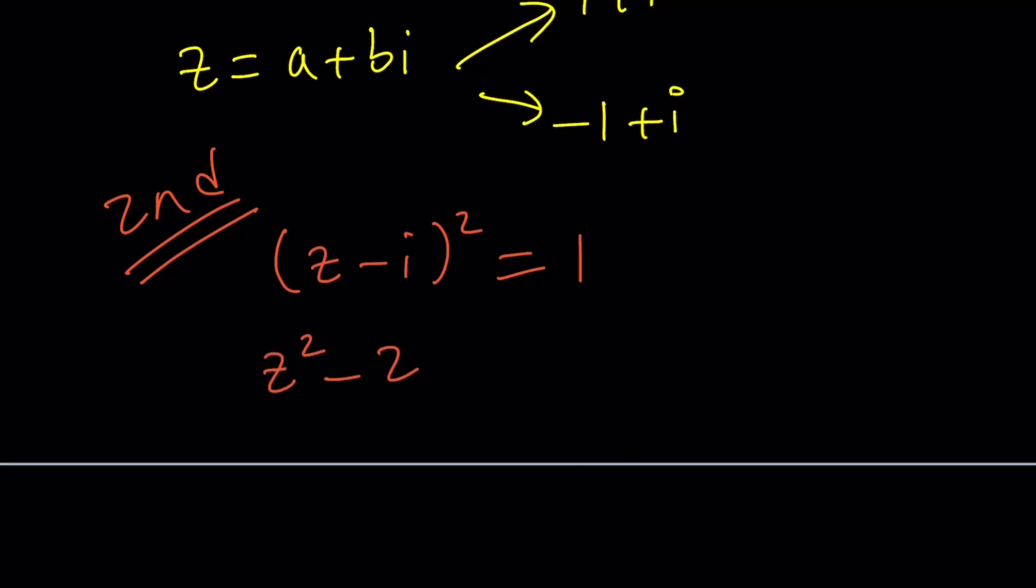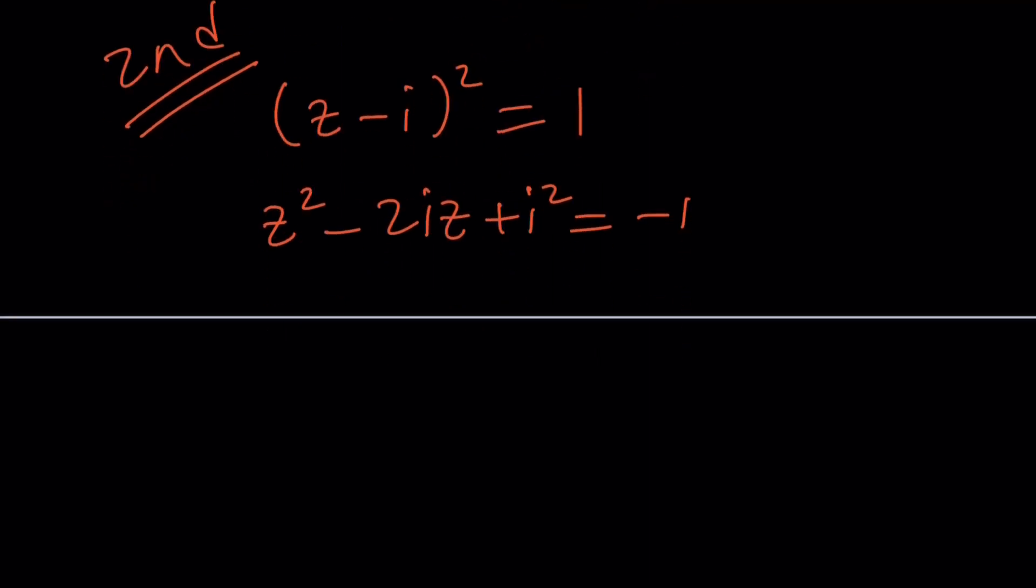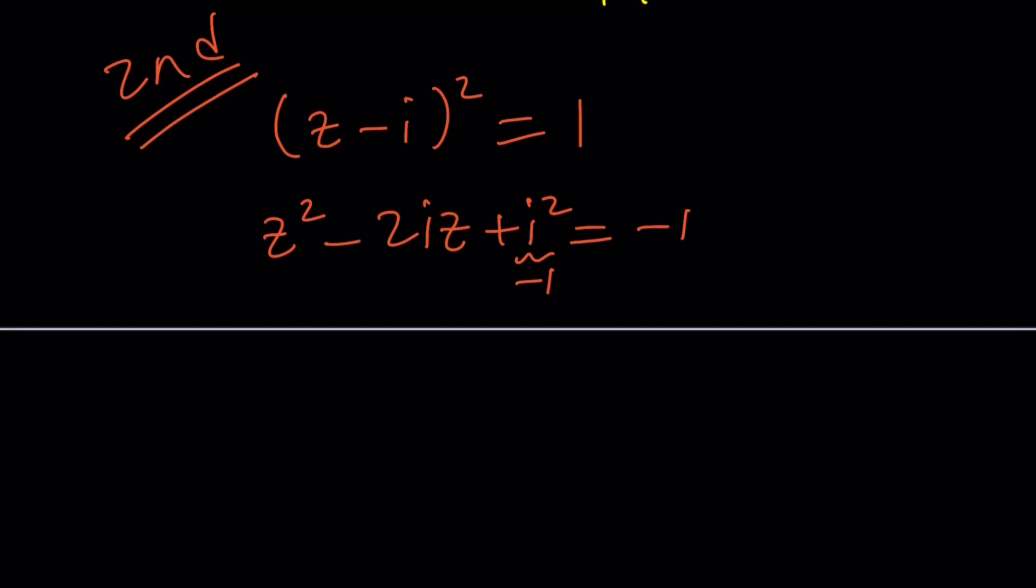z² - 2iz + i² equals negative one. Remember, i² equals negative one. So from here, you're going to get, if you bring the negative one over here, you're going to get z² minus 2iz equals zero. Make sense?